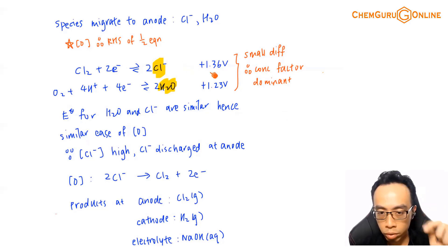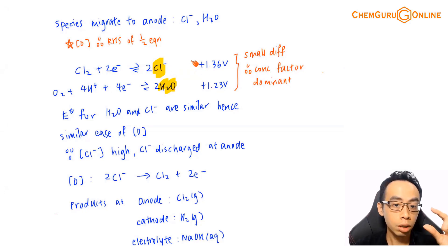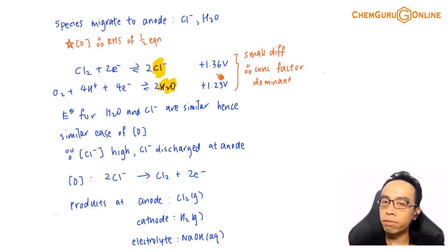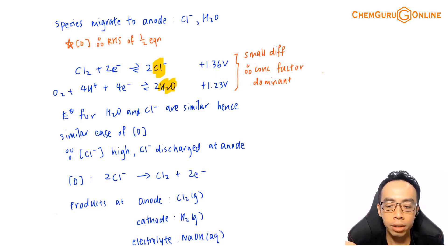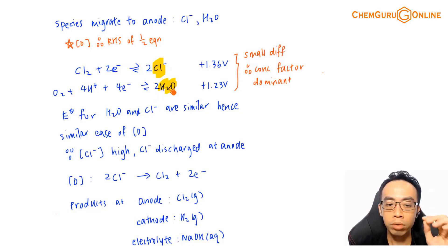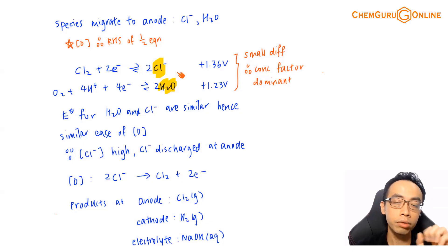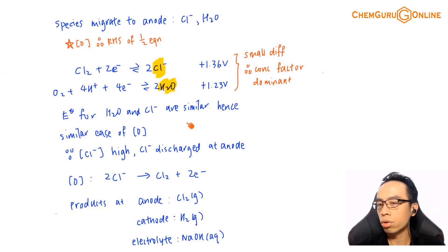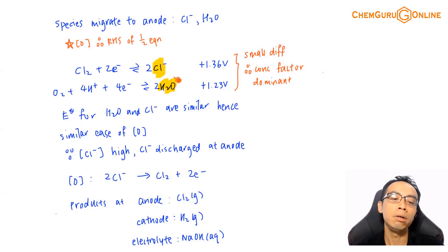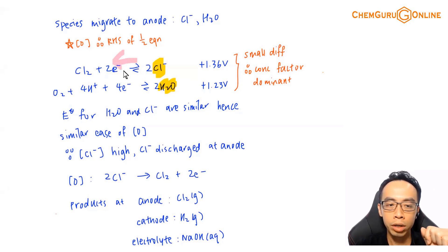The two half equations at the anode are: plus 1.36V for Cl⁻, and plus 1.23V for water. Notice these two values are very, very close — the E-value difference is about 0.1V. This means the ease of oxidation for both species is roughly the same, so E-value is not so important anymore. With the concentration factor — since Cl⁻ is concentrated — concentration overrides E-value. So Cl⁻, with the higher concentration, will be discharged: Cl⁻ is oxidized to Cl₂.